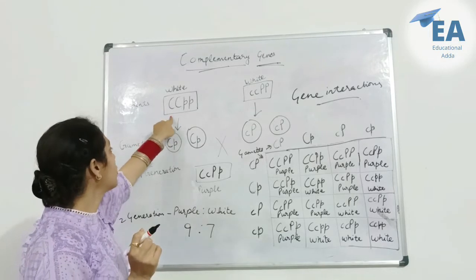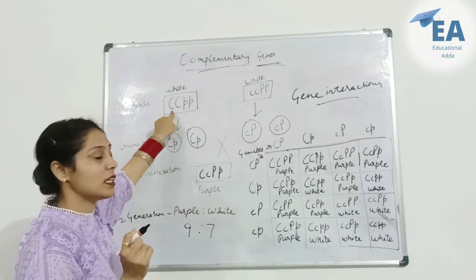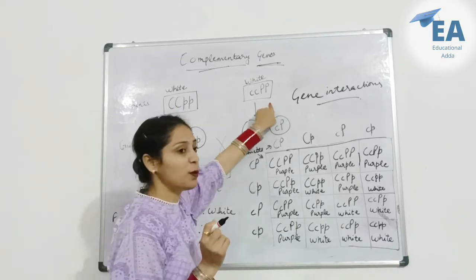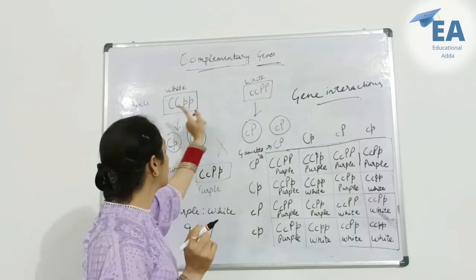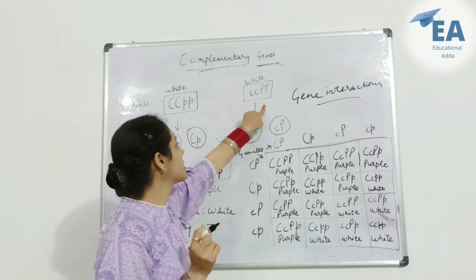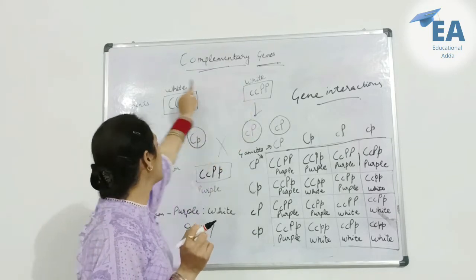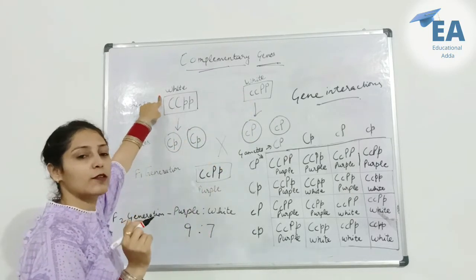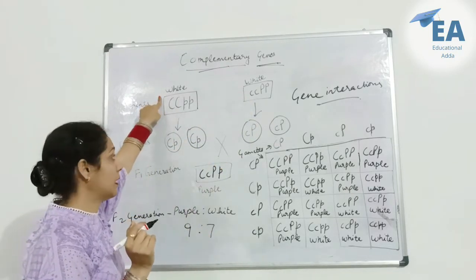There are two dominant genes: capital C and capital P. When these two genes are present independently, the plant produces white color flowers.